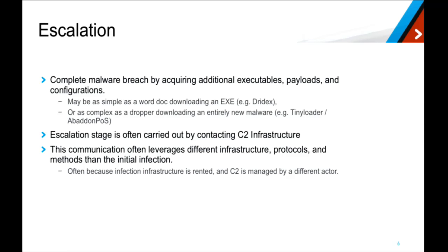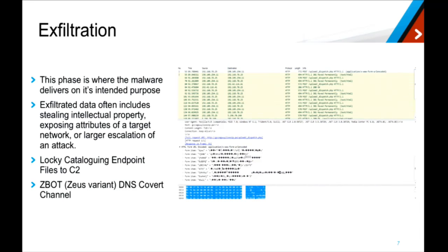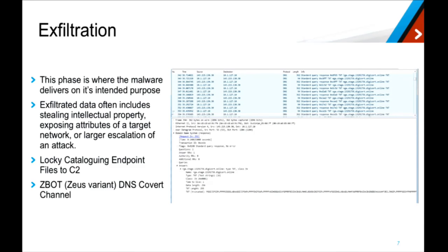The command and control channel is used for a lot of different things — pushing the actual configuration, escalating the breach, reaching out to C2 infrastructure. Another aspect is actual exfiltration: getting the intellectual property on an endpoint out into the attacker's hands. If we look at something like Locky, it goes through and catalogs all the files on the endpoint, figures out what's interesting, and encrypts them. If we look at something like Zbot, it's actually using a DNS channel for command and control — they didn't even have to use anything special. With DNS you can just send a query and it finds its way home to the server and back, exchanging commands and information.